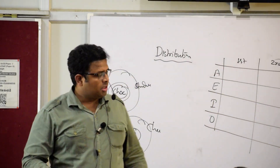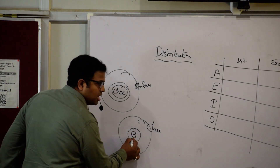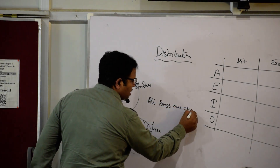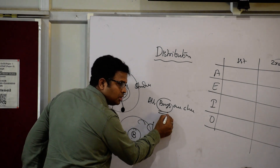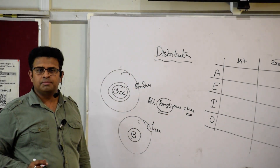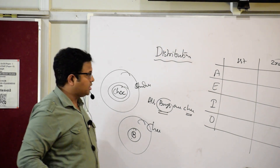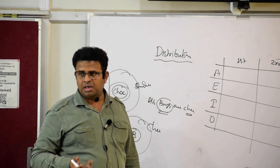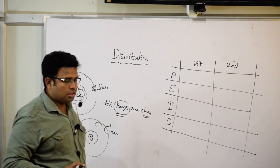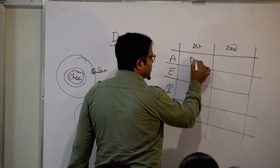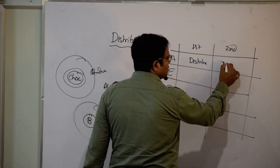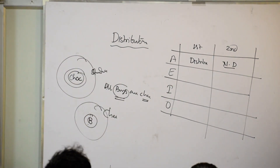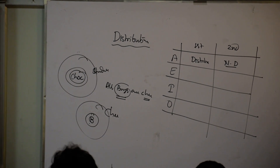What is the meaning of distribution? All boys are chairs — what does it mean? It means the first term will be distributed and the second term will not be distributed. This question has come 4-5 times in exams, so do not take it lightly. In case of A, the first term — boys — is distributed.